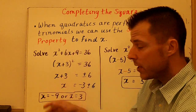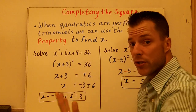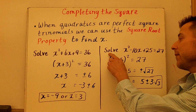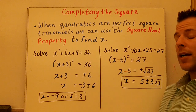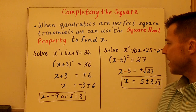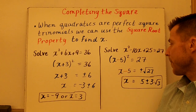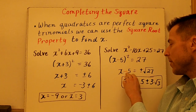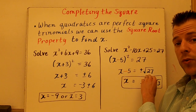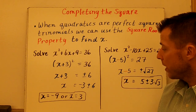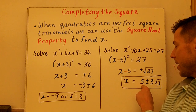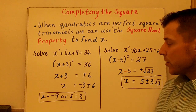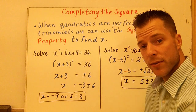The process of the square root property is taking the square root of both sides to solve for x. On the right here, solve x squared minus 10x plus 25 equals 27. So that's x minus 5 squared equals 27. You square root both sides — you have x minus 5 equals plus or minus root 27. Root 27 is not a perfect square. To solve for x, you add 5 to both sides, and I simplify root 27 to plus or minus 3 root 3.